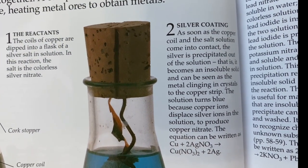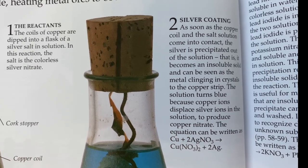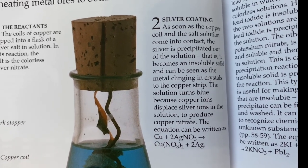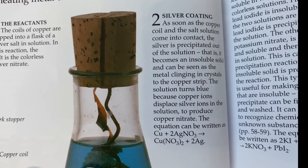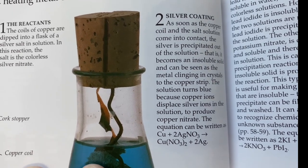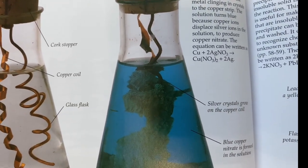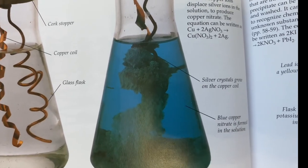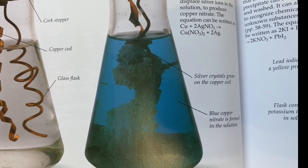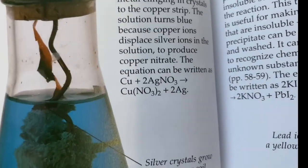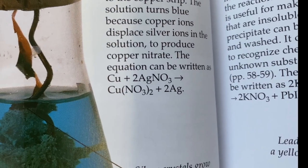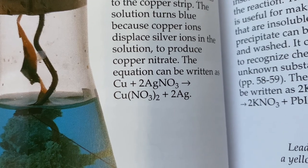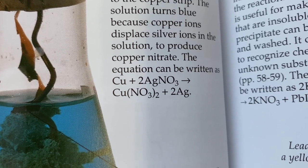As soon as the copper coil and the salt solution come into contact, the silver is precipitated out of the solution — that is, it becomes an insoluble solid and can be seen as the metal clinging in crystals to the copper strip. The solution turns blue because copper ions displace silver ions in the solution to produce copper nitrate. The equation shows copper ions displacing silver ions to produce copper nitrate and silver.